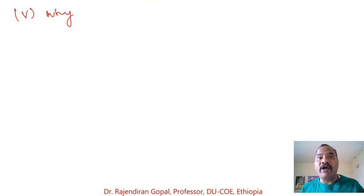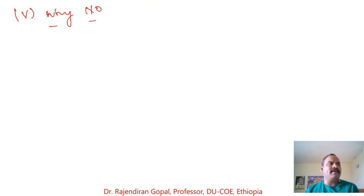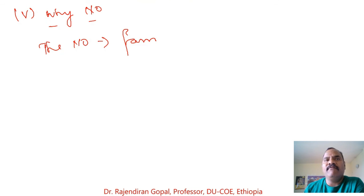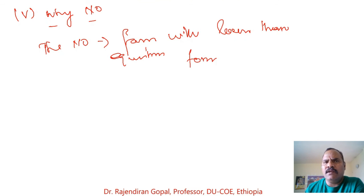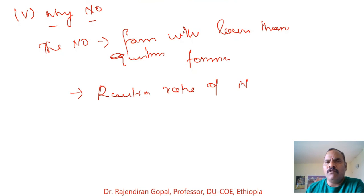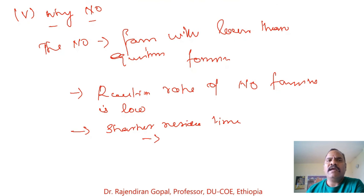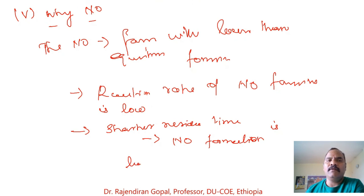For the final question: why might the NOx concentration in the exhaust differ from the equilibrium prediction? The actual NO formation is lower than the equilibrium calculation because the reaction rate of NO formation is slow and the residence time in the combustion chamber is short, meaning equilibrium is not actually reached during the process.